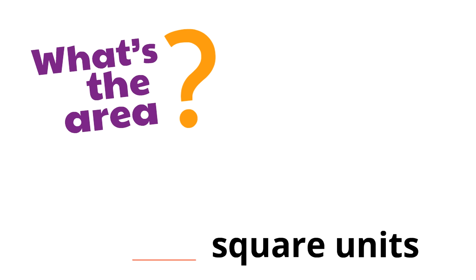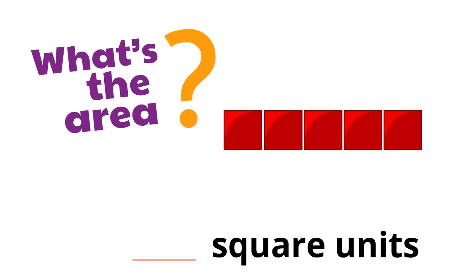Let's try figuring out the area of this rectangle. Just like last time, we are going to measure the area of this rectangle using square units. Remember, the area of a shape is the space inside of the shape. So, how many square units are in this rectangle? Yeah, there are five square units in this rectangle. Great job. That's the area of this rectangle — five square units.